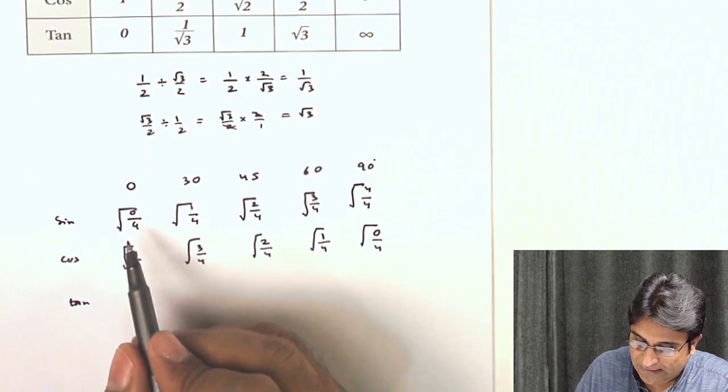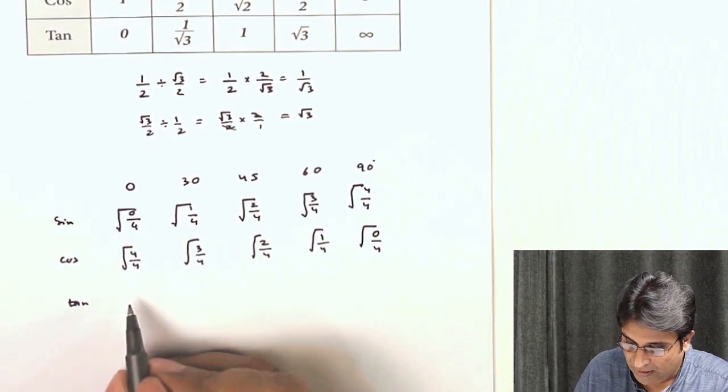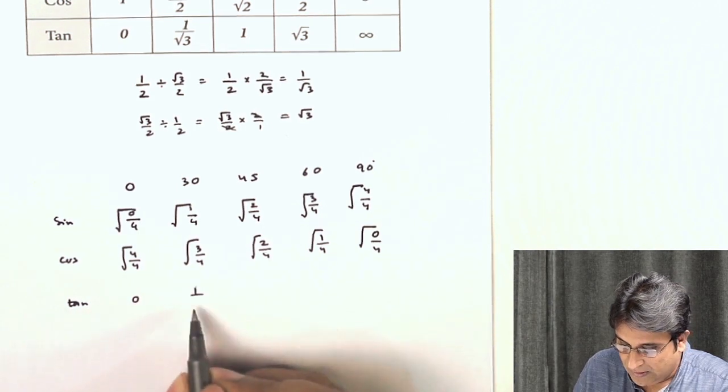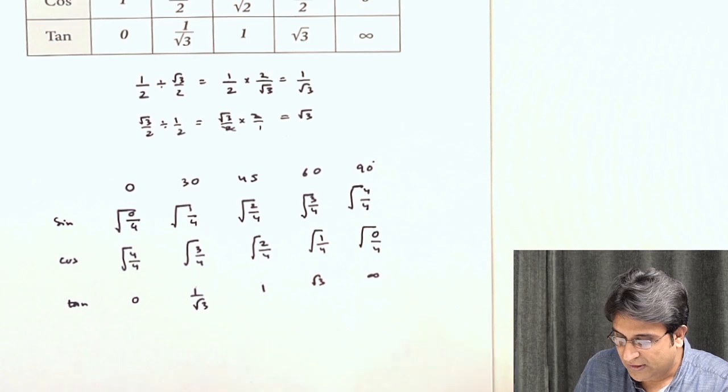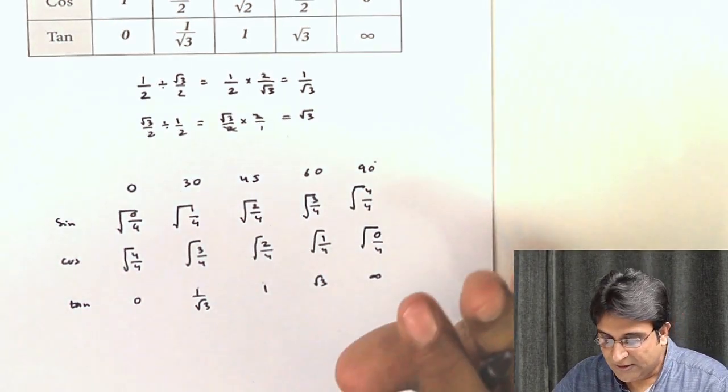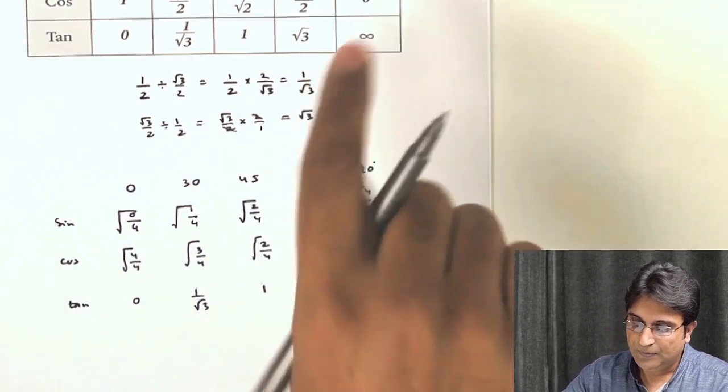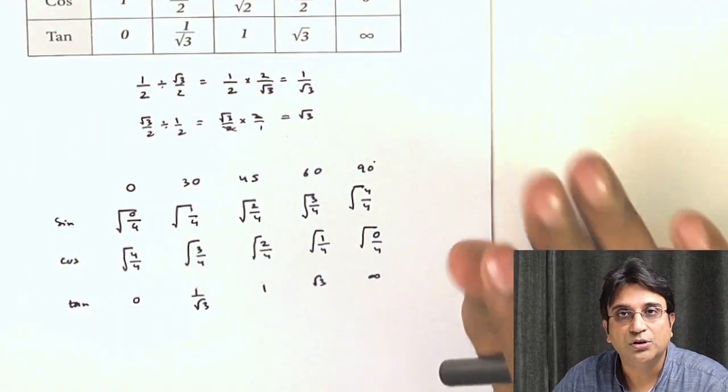To get tan, as I told earlier, divide sine by cos. So again you will get this: 0, 1 by root 3, 1, root 3, infinity. So this is the basic trick to construct this table, but I do not wish that you should use it very often. You must learn it.